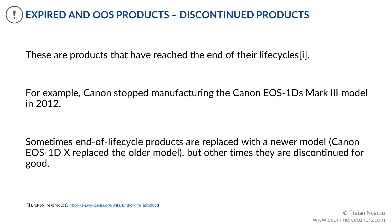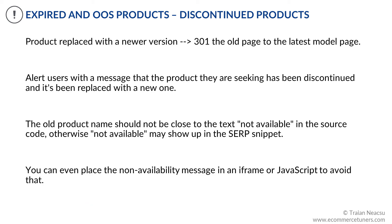Let's see how you can handle discontinued products — these are products that have reached the end of their life cycles. For example, Canon stopped manufacturing the Canon EOS 1DS Mark III model in 2012. Sometimes, end-of-life-cycle products are replaced with a newer model, but other times they are discontinued for good. If a product is replaced with a newer version, you can 301 the URL for the old model to the latest product URL. If possible, alert users with a message that the product they are looking for has been discontinued and has been replaced with a new one.